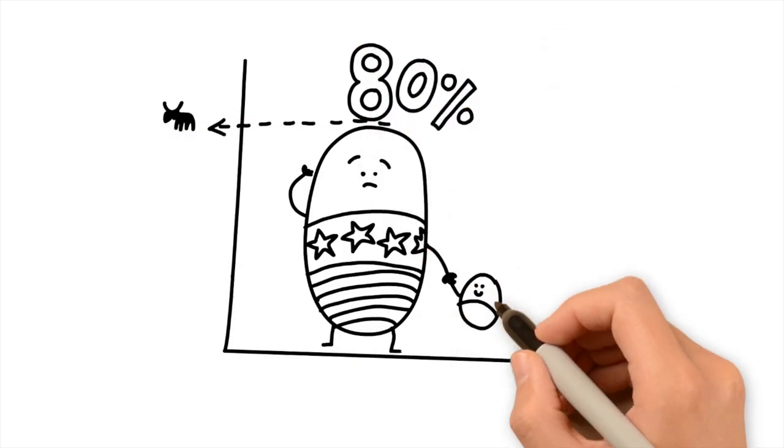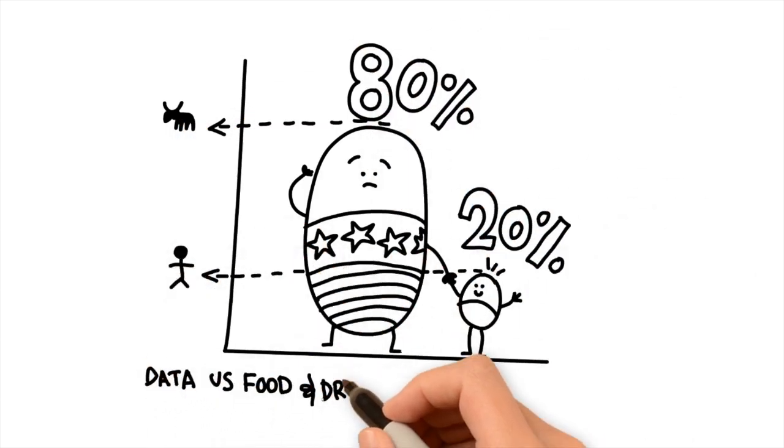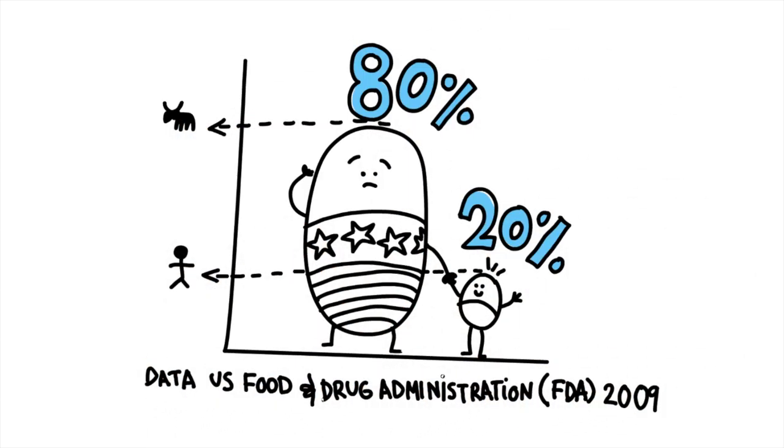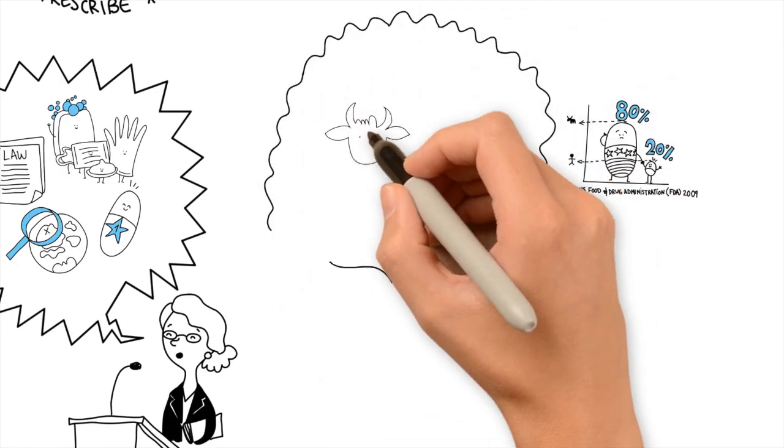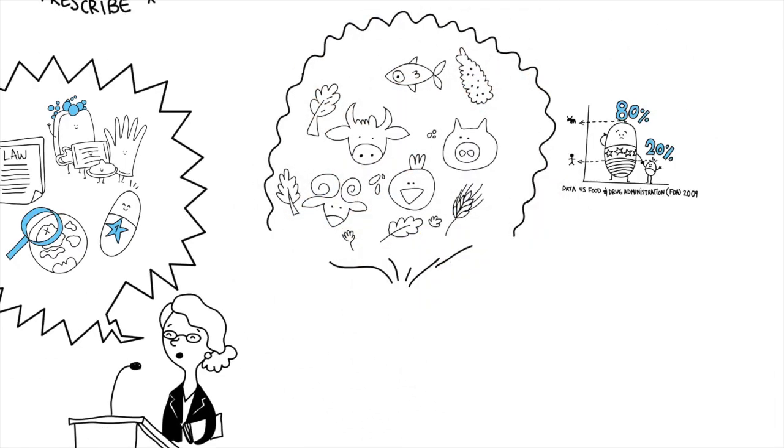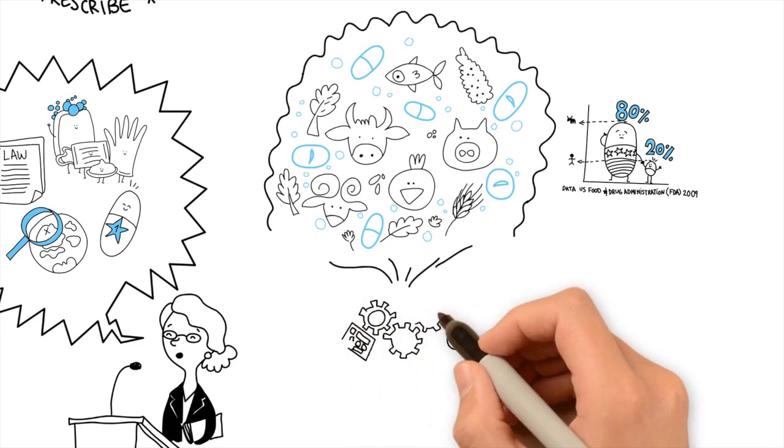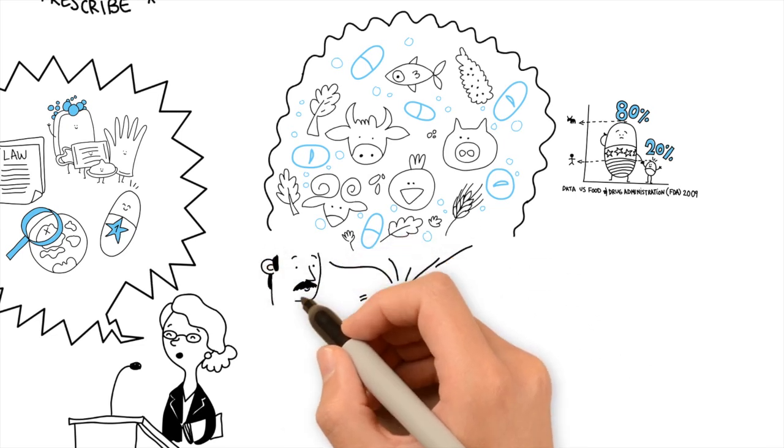Did you know that more antibiotics are used on healthy food-producing animals than on treating sick people? That the same drugs we take are given to animals in bulk to prevent disease and promote growth?